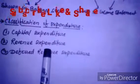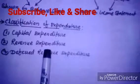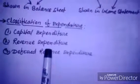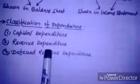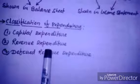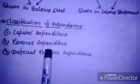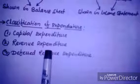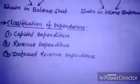Further examples of revenue expenditure include: repairs, replacements and renewals; depreciation of fixed assets; wages, salary, rent, rates and taxes; administrative expenses; selling and distribution expenses; and interest on loans for the business.